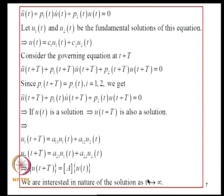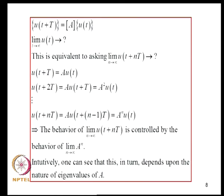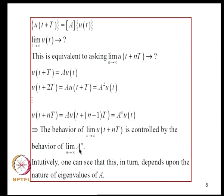We are interested in the nature of the solution as t tends to infinity. Writing U at t + NT and allowing N to go to infinity, we have U(t+NT) = Aᴺ·U(t). So the behavior as N tends to infinity is controlled by the eigenvalues of A. Intuitively, the limit depends on the nature of the eigenvalues of A.